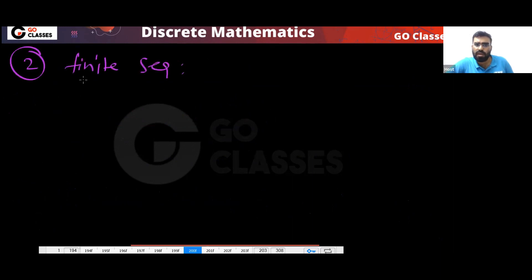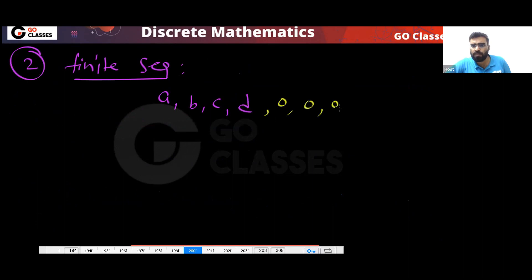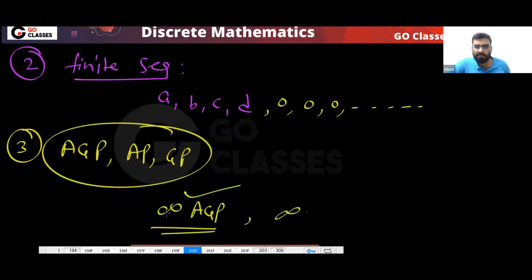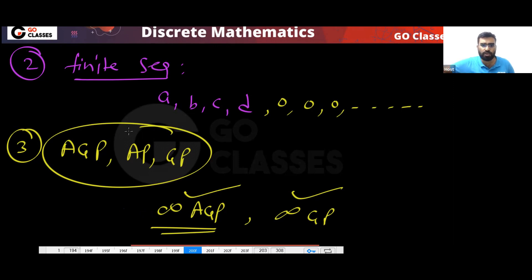The second thing to understand: if you have a finite sequence, for example a sequence ABCD, then you put zeros for missing terms and you will get the corresponding generating function for that finite sequence.